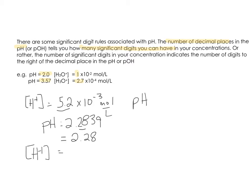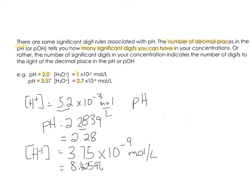Try finding pH if the hydrogen ion concentration is 3.75 × 10⁻⁹ mol/L. Your answer should be 8.42596. Because there are three significant digits in the concentration, there will be three decimal places in our pH, so the final answer is pH 8.426.